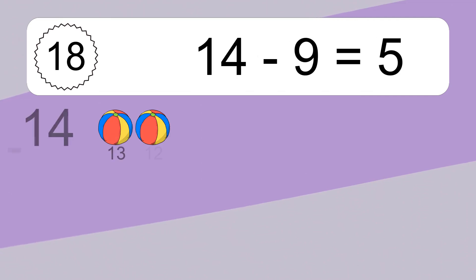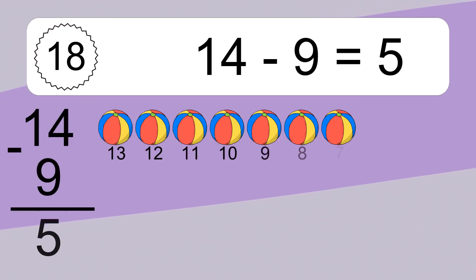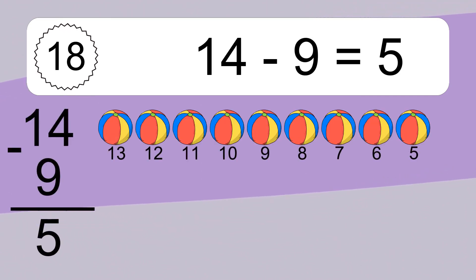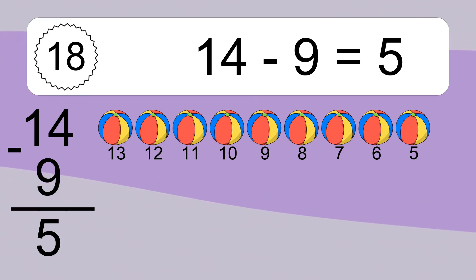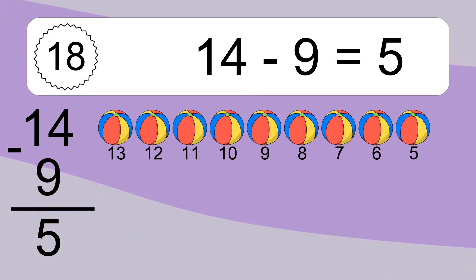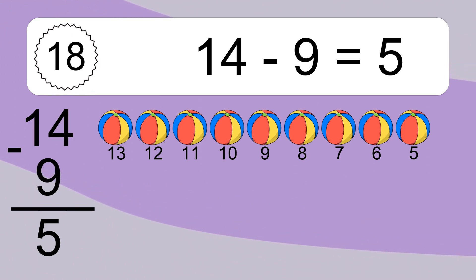14 minus 9 equals what? 14 minus 9 equals 5. Let's count it: 13, 12, 11, 10, 9, 8, 7, 6, 5.